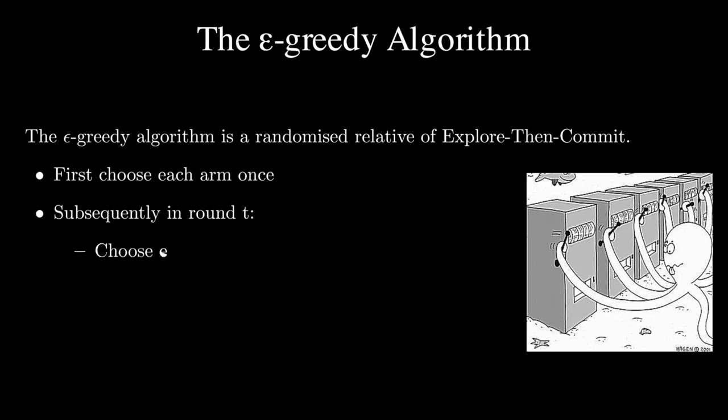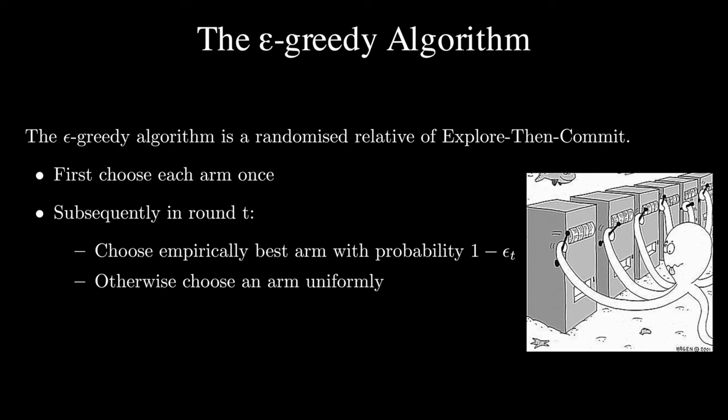First, it chooses each arm once, and then subsequently in each round t, it chooses the empirically best arm with probability 1 minus epsilon. Otherwise, it chooses an arm uniformly at random.